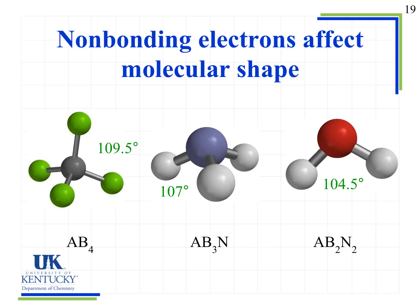These pictures show the same molecules using a ball-and-stick model instead of Lewis structures, making the angles easier to see. The 109.5-degree angle refers to methane (AB4). The 107-degree angle is the H-N-H angle in ammonia. And the H-O-H angle in water is a little smaller than in NH3, and smaller than in AB4 like methane.